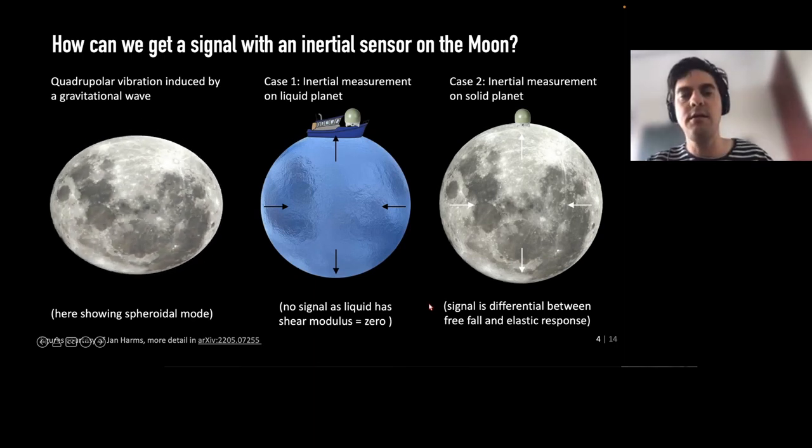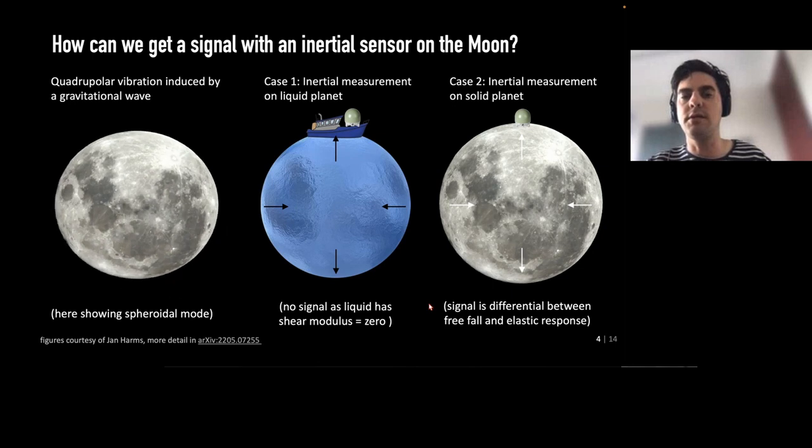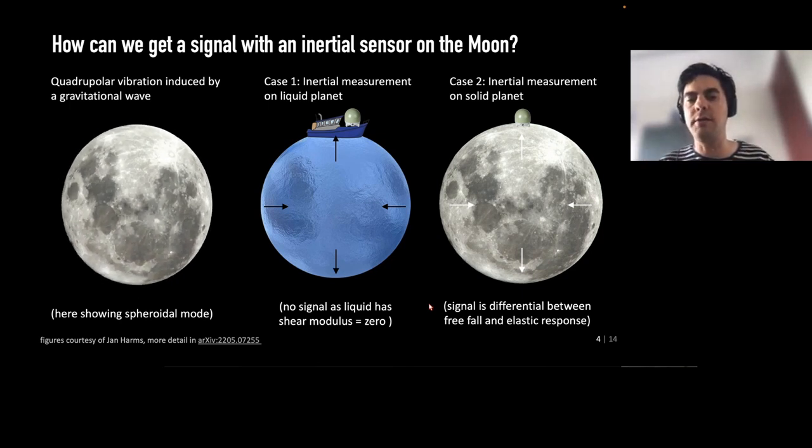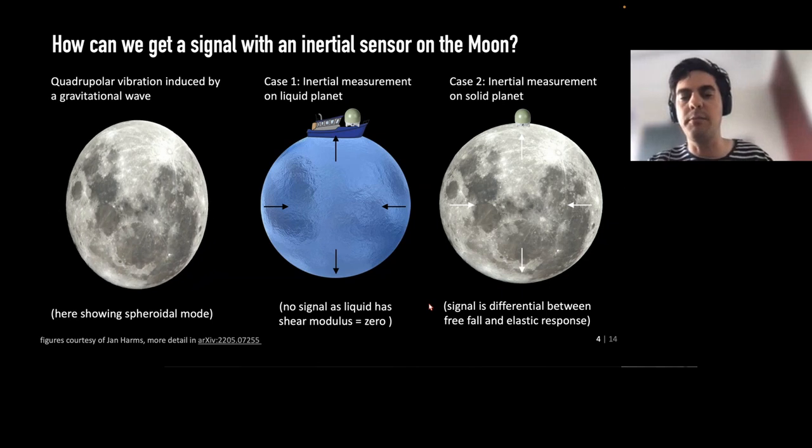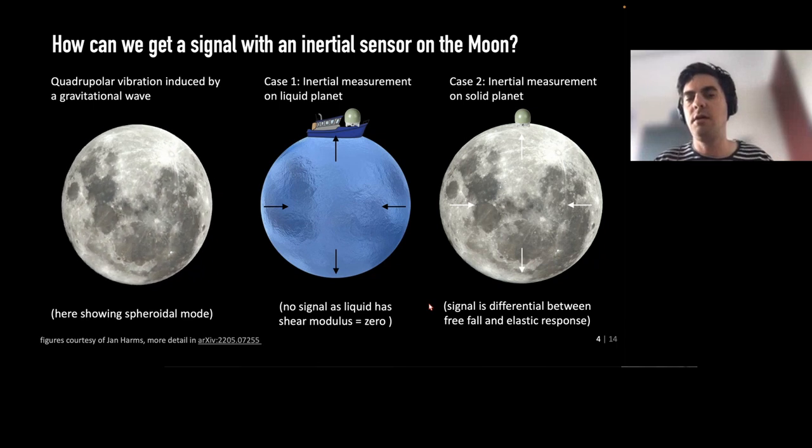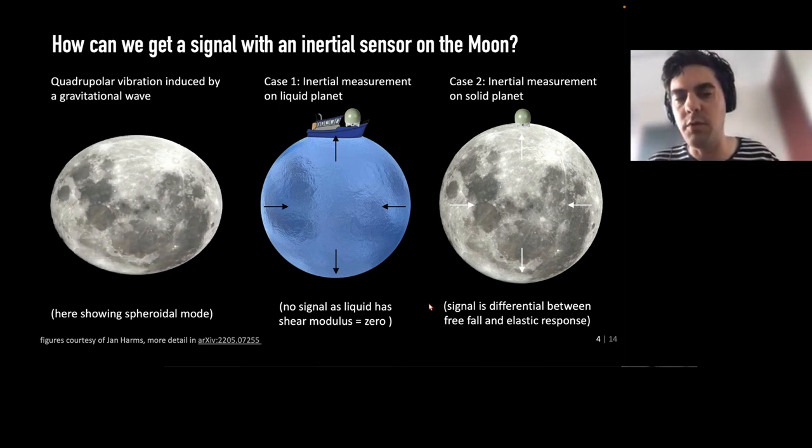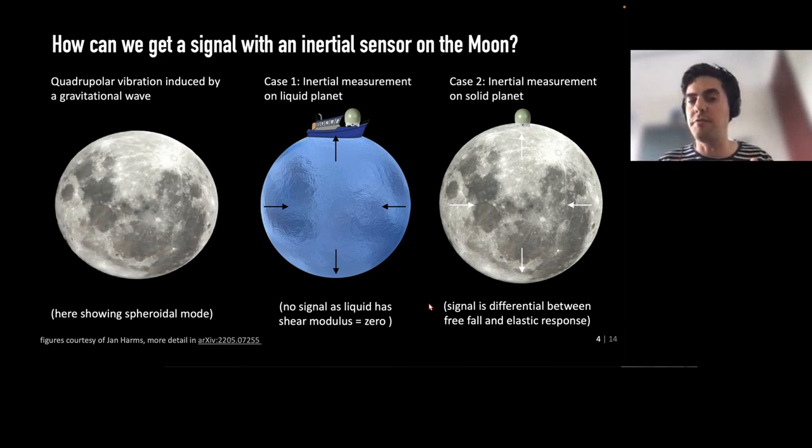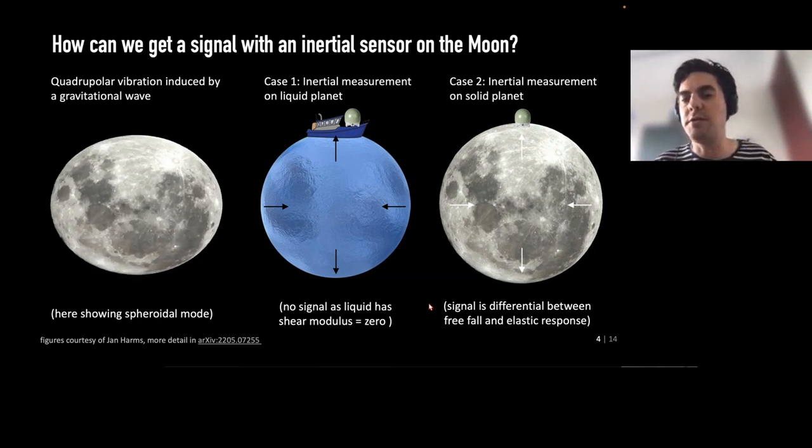So here I would like to show you two cases to discuss this concept and show you how we get a signal. So one fictive case is where we put our sensor on a liquid planet. Of course we can't do that, so we need a little boat as you can see. But if a gravitational wave stretches and squeezes this liquid planet, then this liquid planet will just follow along with the changing gravitational wave potential because it has no shear modulus. The suspended proof mass inside your inertial sensor also follows along with this changing gravitational potential. So in effect, because an inertial sensor measures the differential displacement between the frame in which you suspend the proof mass and the proof mass itself, you will not measure any signal.